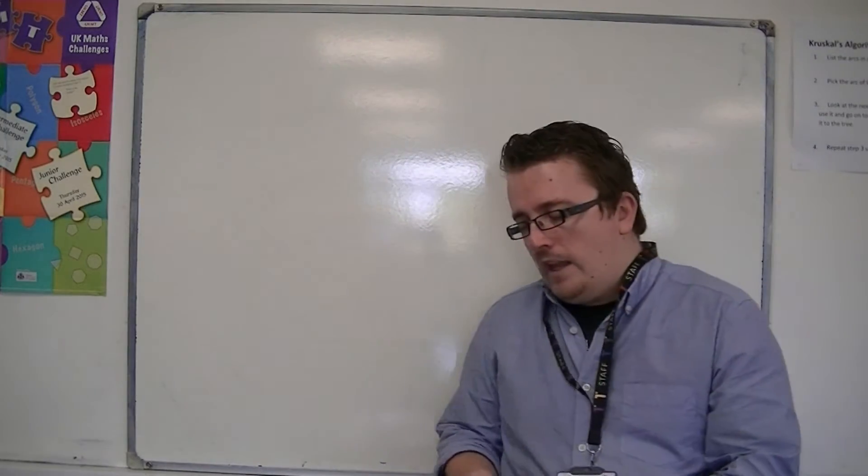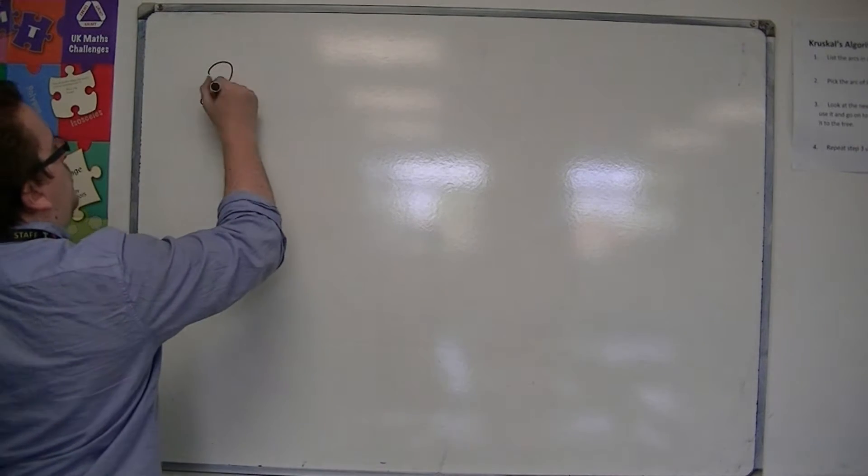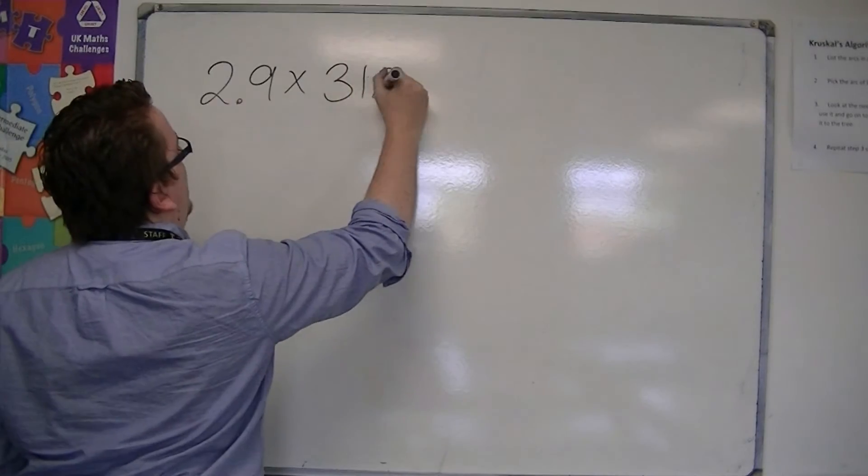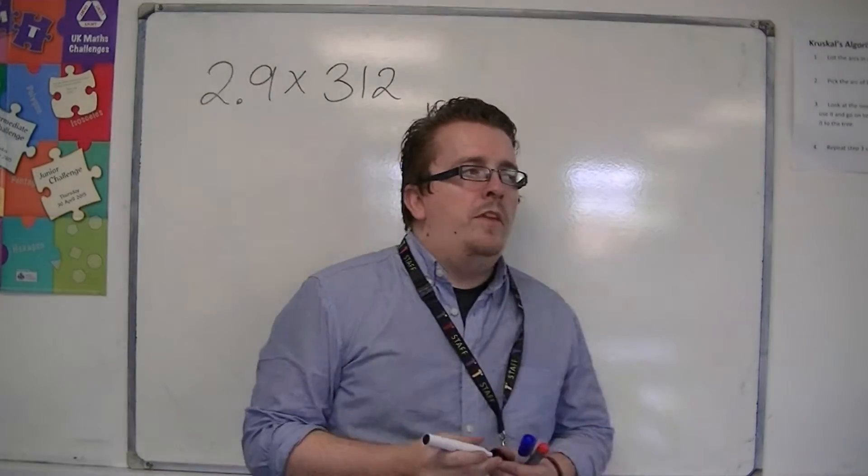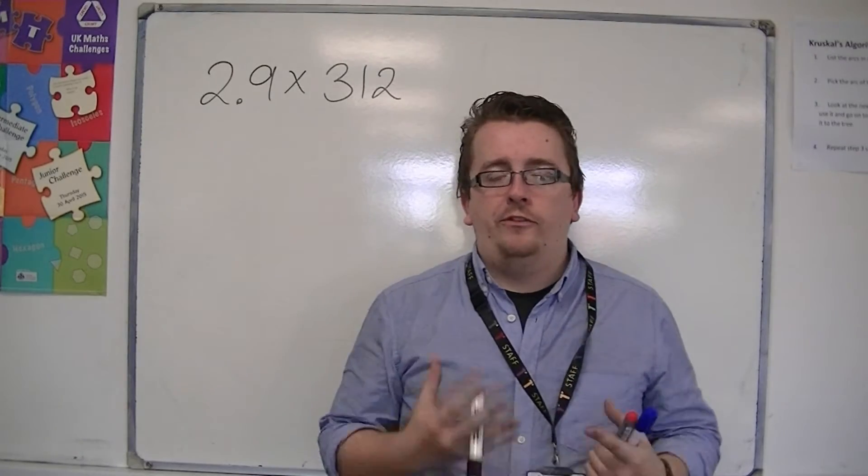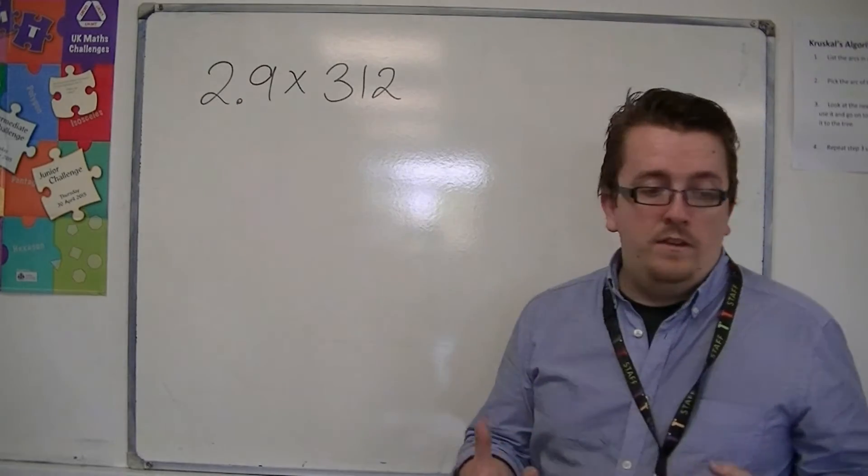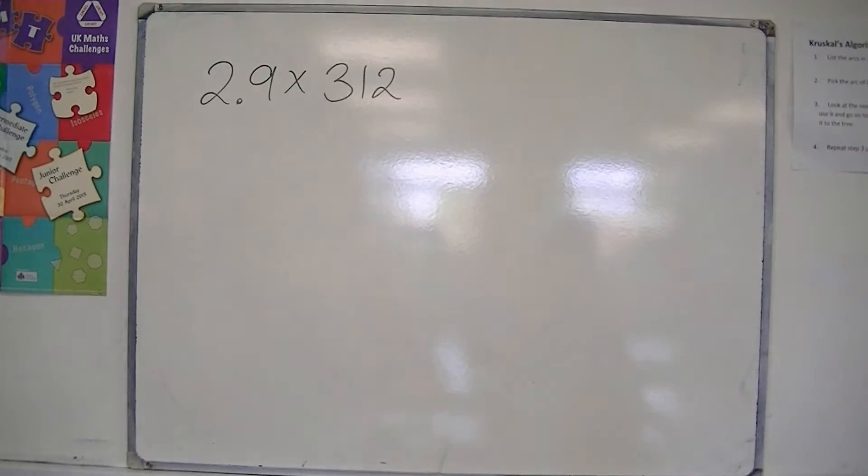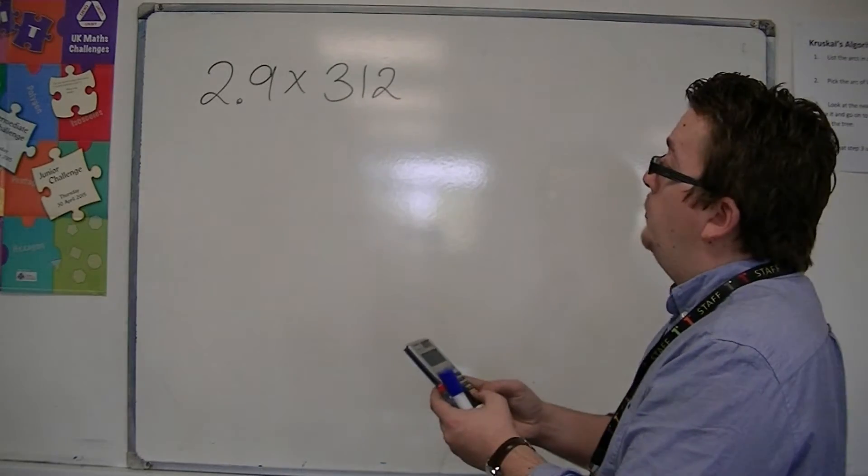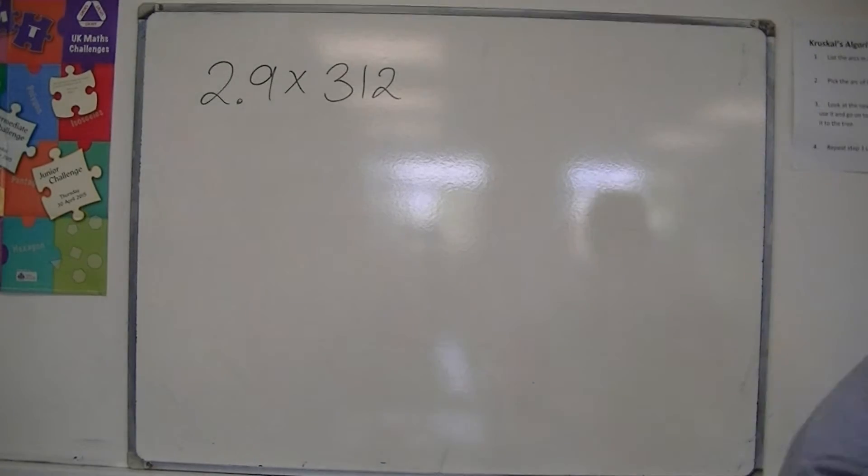If you had something like 2.9 times 312, then obviously we would be able to do this by hand now. So if we did it by hand, well, I'll do it quickly on a calculator just to show, because we could do it by hand, but on a calculator, 2.9 times 312 is 904.8.